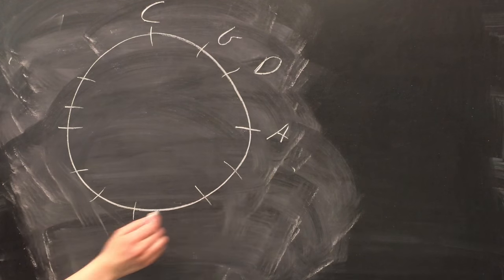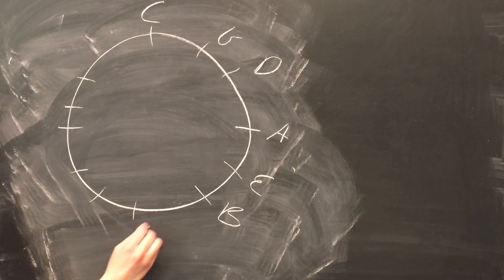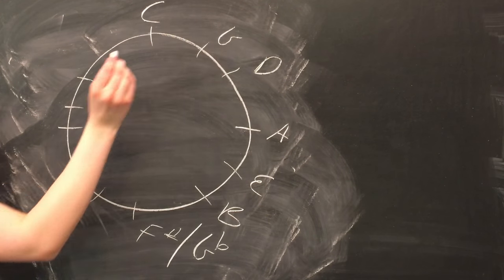First, to G, then D, A, and so on and so forth. We fill in the entire circle like this. Then we can work on the key signatures.